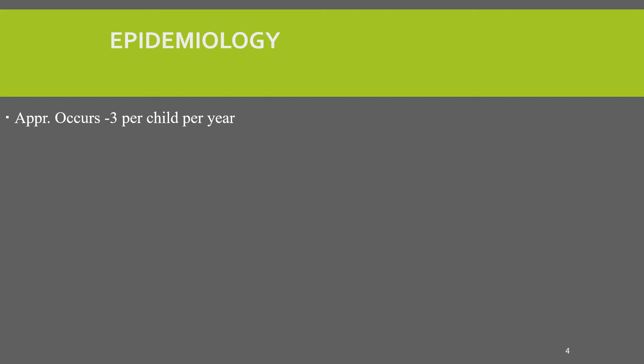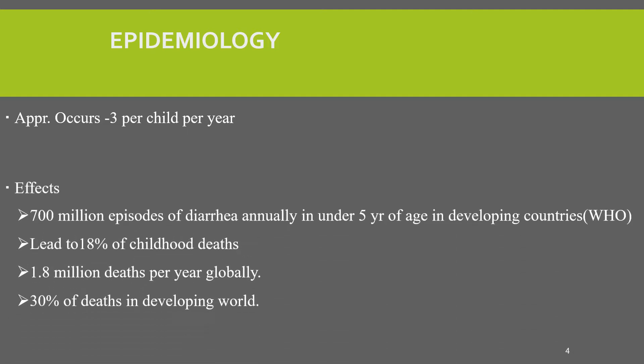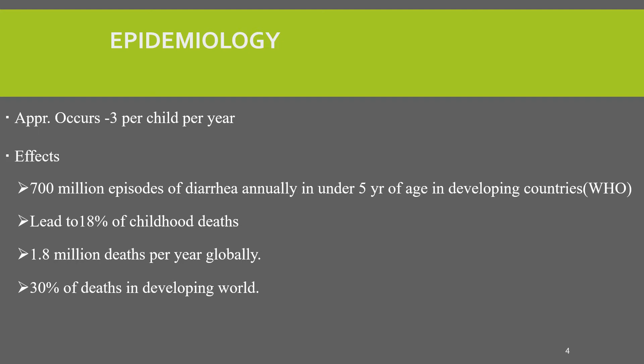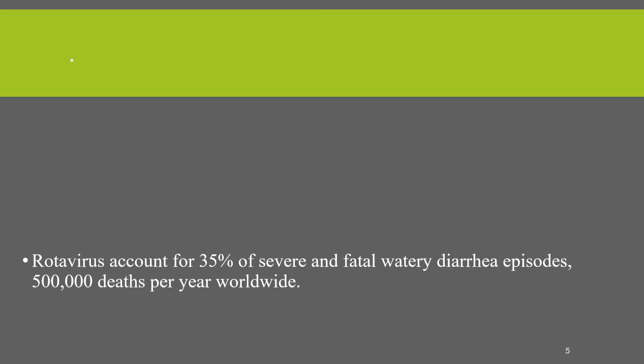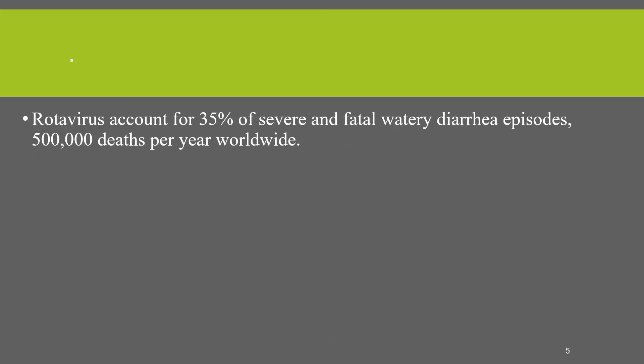When we see epidemiology, diarrhea occurs approximately three times per year per child, and this causes more than 700 million episodes of diarrhea annually in under-five-year-olds in developing countries. It leads to more than eight percent of childhood deaths, and around one to 1.8 million deaths per year occur due to diarrhea, with 30 percent of deaths in the developing world in under-fives due to diarrheal disease. Rotavirus accounts for 35 percent of severe and fatal diarrhea and is responsible for 500,000 deaths per year worldwide before vaccination.